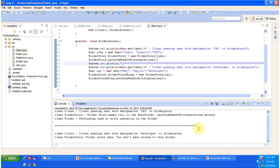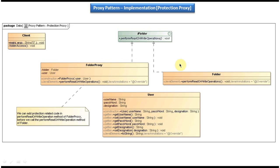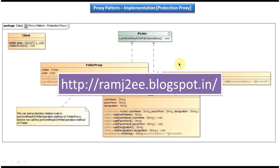This is a very good example of protection proxy. I'll open the class diagram again — I think you understand this class diagram and the code clearly. I have put all this sample code in my blog called ramjde. You can visit the blog and get the sample code. This is about proxy design pattern implementation using protection proxy. Thanks for watching, bye.